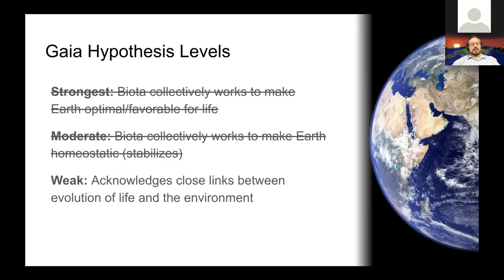The Gaia hypothesis has strong, moderate, and weak modes. The stronger versions are largely discredited for attributing too much agency to the biosphere, but even critics acknowledge it does an excellent job of articulating the close links between the evolution of life and the environment.